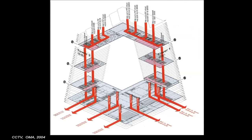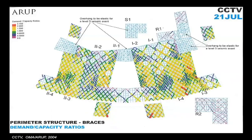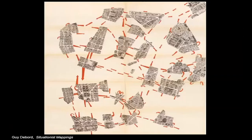Map making is used for a wide range of representation, from charting egress paths to understanding stress-strain relationships on a facade. It can be used for everything from quantitative to qualitative items.